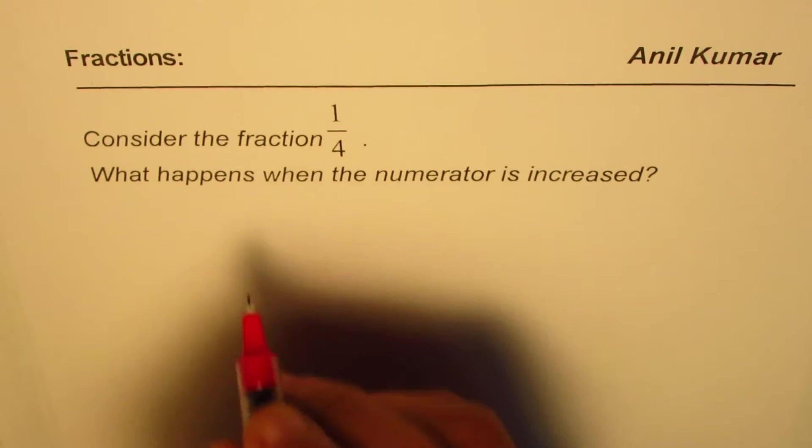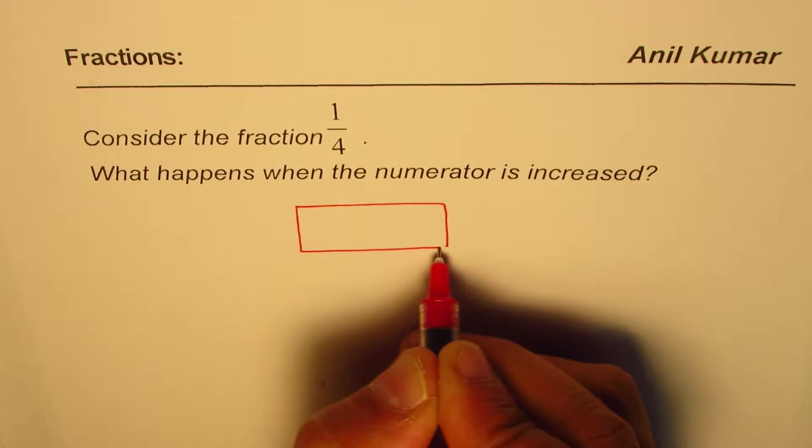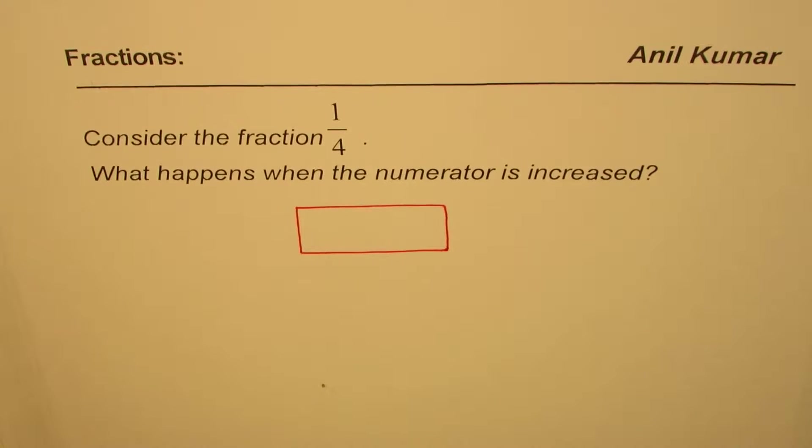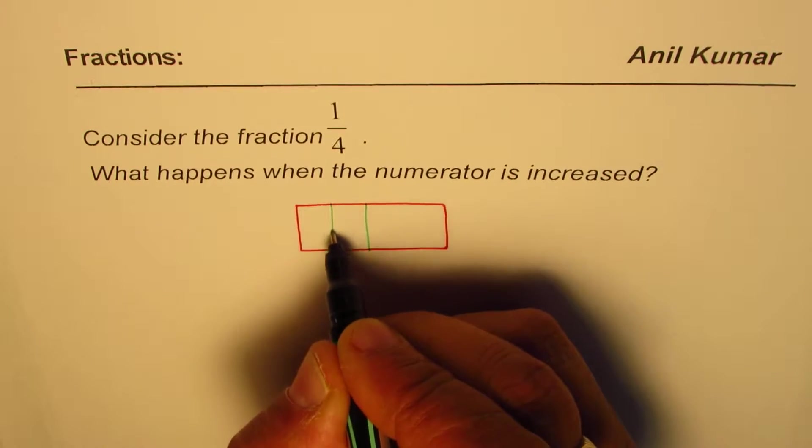So when we say that the fraction is 1 over 4, it means what? It means that if I have a piece, let's say it's a chocolate bar, and we divide it into 4 equal parts, let's say like this, 4 equal parts.